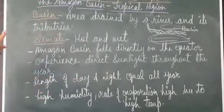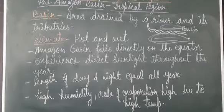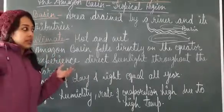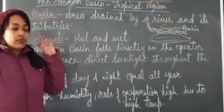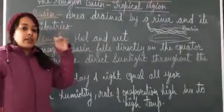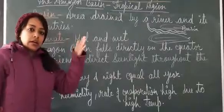For climate, we'll see the Amazon Basin climate. It's hot and wet. Basically, it is hot and wet because Amazon Basin lies very close to the equator, 10 degrees north to 20 degrees south.